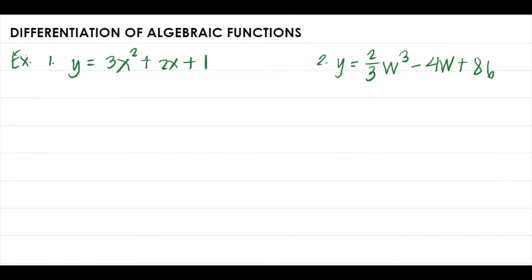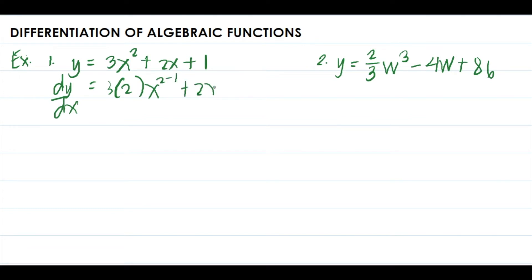From this video we will solve some problems relating to the rules of differentiation. First example: find the derivative of y equals 3x squared plus 2x plus 1. The solution — the derivative of y is dy over dx. We bring down the exponent, so this is 3 times 2, then we subtract one from the exponent, so this is x to the two minus one, plus 2x to the one minus one.